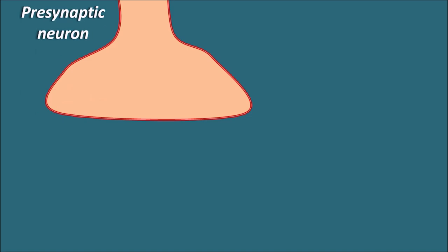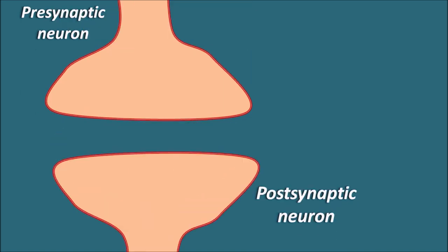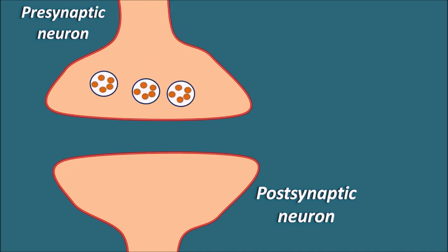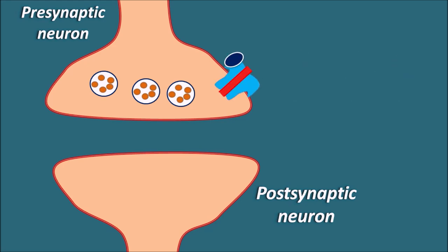Suppose this is a presynaptic neuron. Neuronal transmission takes place from the presynaptic neuron to the postsynaptic neuron by release of neurotransmitters. Within the presynaptic neuron, neurotransmitters are stored in storage vesicles, and their release is controlled by voltage-gated calcium channels present on the presynaptic nerve terminals. These ion channels are called voltage-gated calcium channels because they open based on the voltage of the presynaptic neurons.